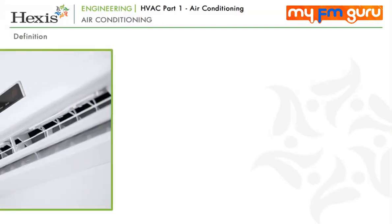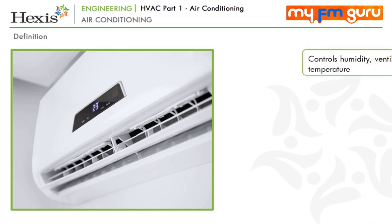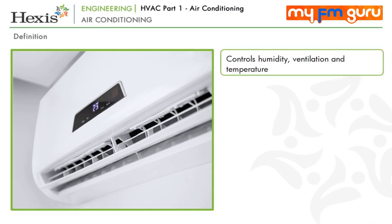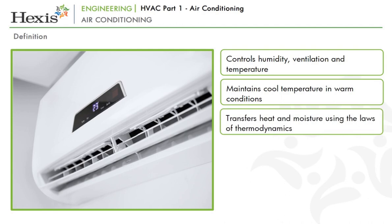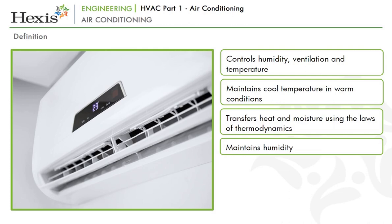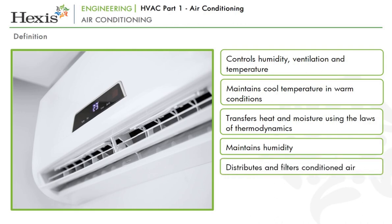Air conditioning can be defined as a system for controlling the humidity, ventilation and temperature in a building, typically to maintain a cool atmosphere in warm conditions. The air conditioning refrigeration cycle process removes heat and moisture from a building and transfers that heat to an area external to the building. The air conditioner itself does not create heat — it just transfers heat, employing the laws of thermodynamics. It not only maintains the temperature but also maintains suitable humidity in all parts of a building, resulting in a comfortable environment.